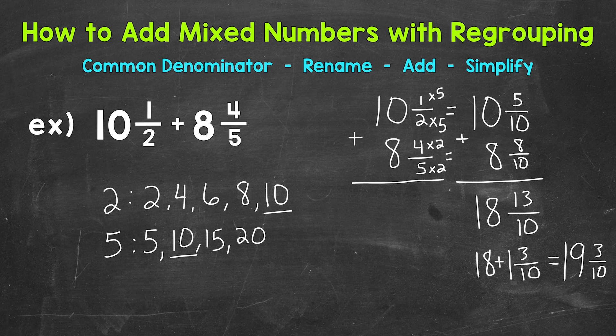So our regrouped answer and final answer is 19 and 3 tenths. Always look to see if you can simplify the fractional part of a mixed number. 3 tenths is in simplest form. The only common factor between 3 and 10 is 1. So we are done. 19 and 3 tenths.